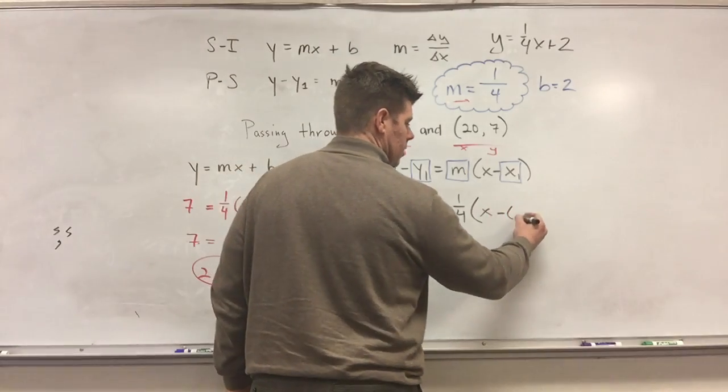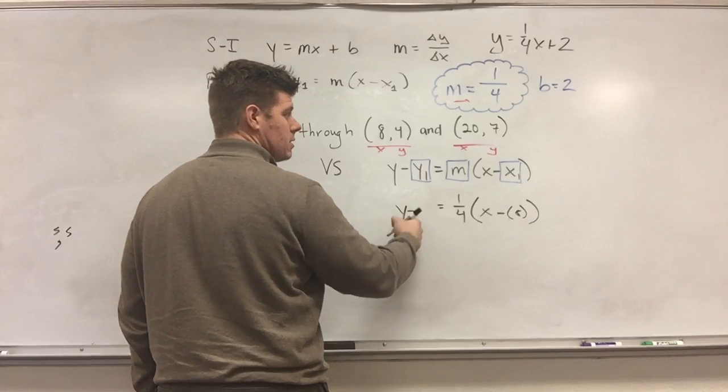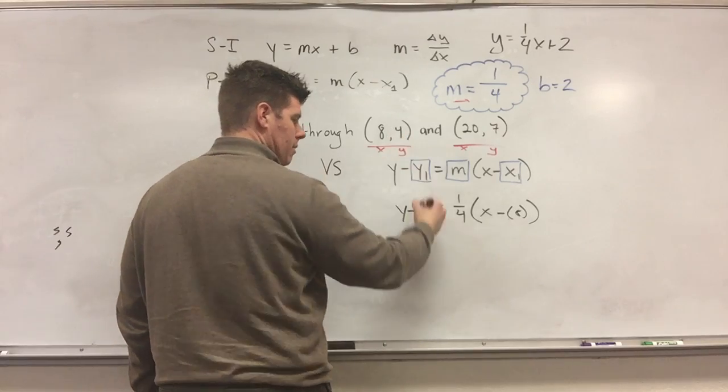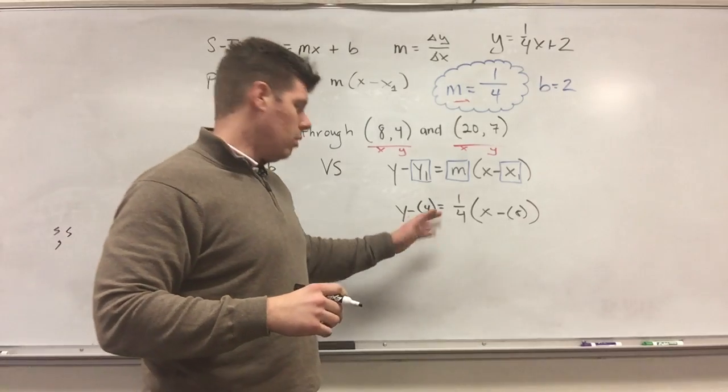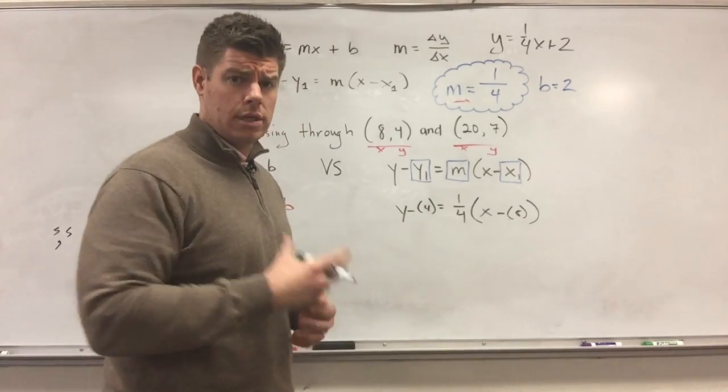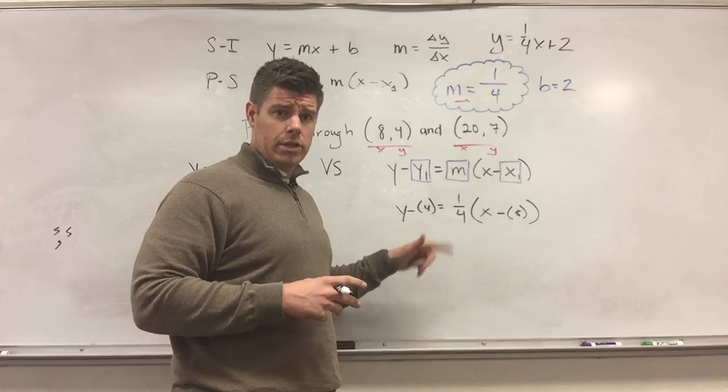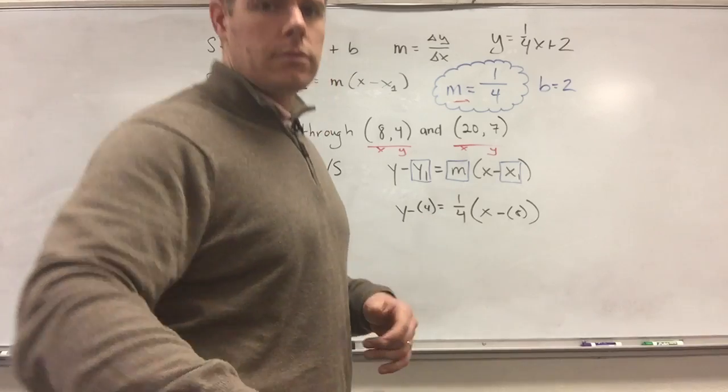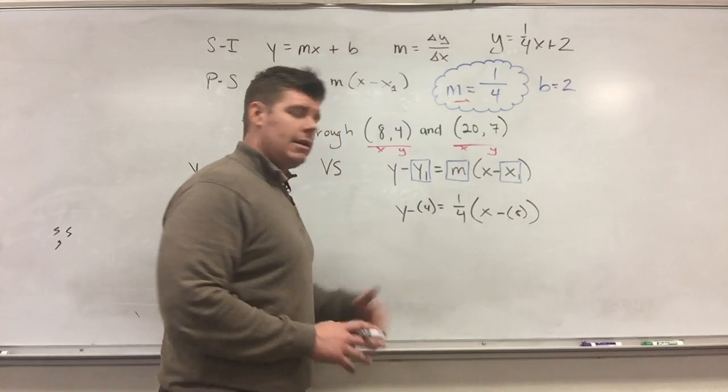So therefore, if we come up here and I use 20, then I got to use the 7. Again, if I use the 8, I got to use the 4. So for this problem, I'm just going to use the 8 and the 4. So x, I'm going to make it an 8. The y, so it's y minus, now y1 is going to be 4. So just remember that whenever you substitute in for the variable, I like to put in parentheses, just in case this is a negative, then two negatives would change that operation to a positive.